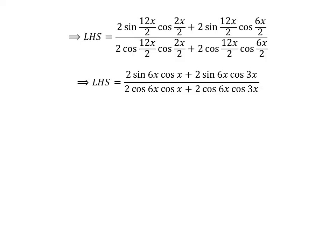After simplifying the half-angle expressions, the left-hand side becomes: 2 times cosine of 6x times cosine of x plus 2 times cosine of 6x times cosine of 3x, in the denominator.